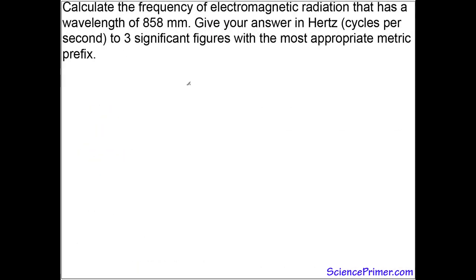First, let's list what we know. We're given the wavelength at 858 millimeters. In addition to this, we know that the speed of electromagnetic radiation is three times ten to the eighth meters per second, and that speed is equal to the wavelength times the frequency. So this is the equation we're going to use to solve this problem.